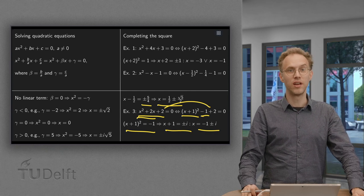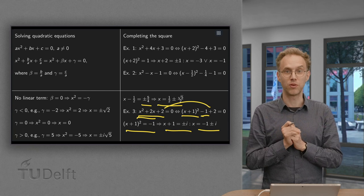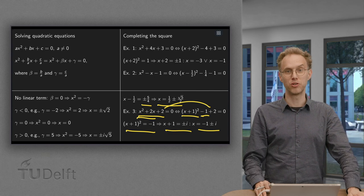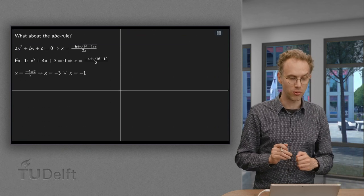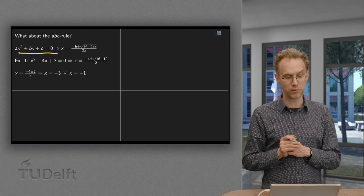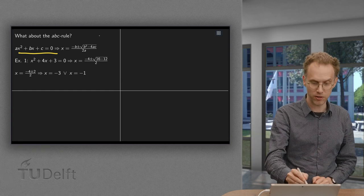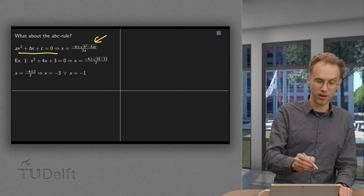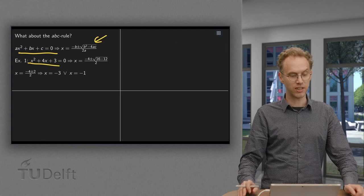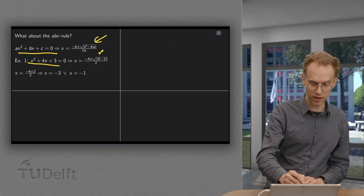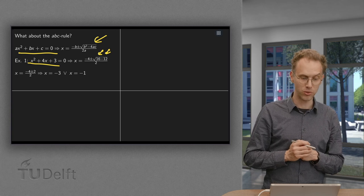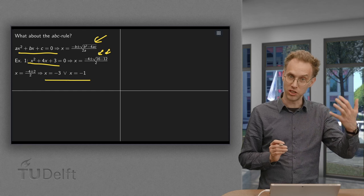That is how you use completing the square to find solutions of quadratic equations. But what about our ABC formula? For ax squared plus bx plus c equals 0, the solution is x equals minus b plus or minus the square root of b squared minus 4ac, all over 2a. Applying this to x squared plus 4x plus 3 equals 0: a equals 1, b equals 4, c equals 3, giving minus 4 plus or minus the square root of 16 minus 12 equals minus 4 plus or minus 2, yielding solutions minus 3 and minus 1 — just as before.